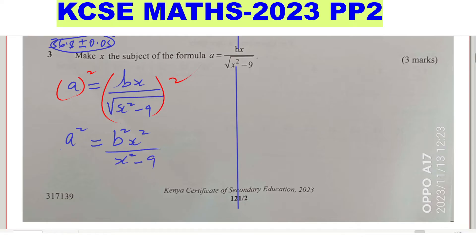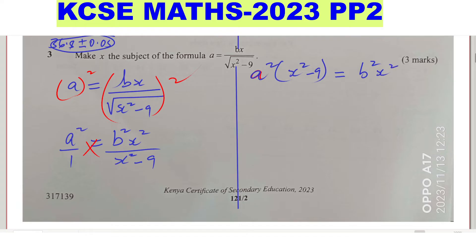From there, you can express a squared as a squared over 1, and then cross multiply. This gives a squared multiplied by x squared minus 9, equals 1 multiplied by b squared x squared. Expanding the brackets: a squared x squared minus 9a squared equals b squared x squared.